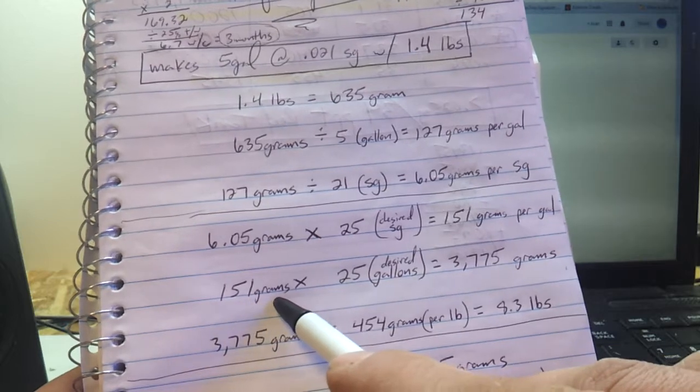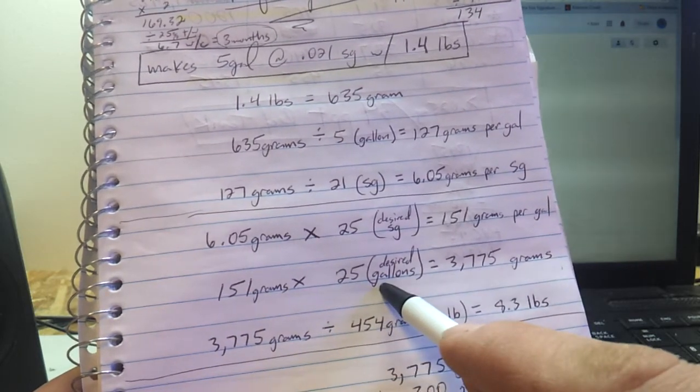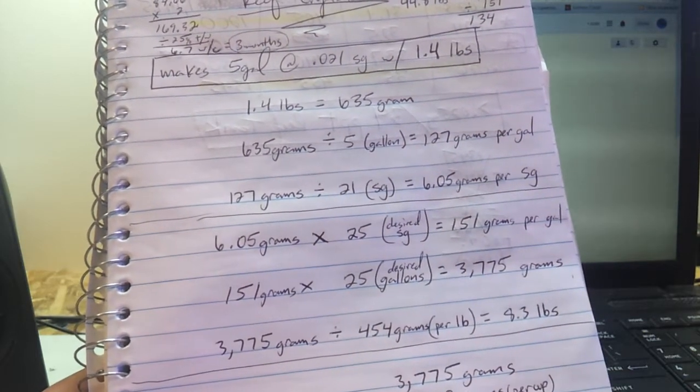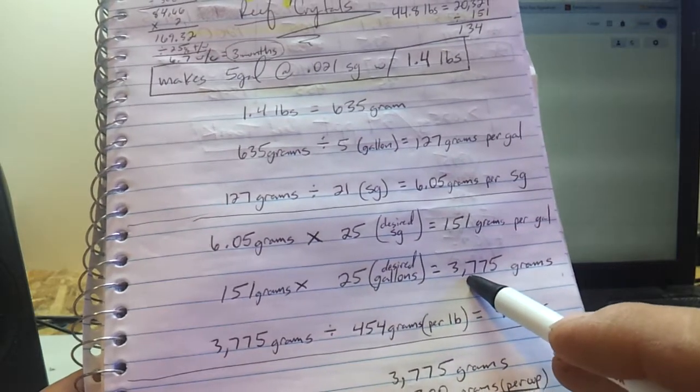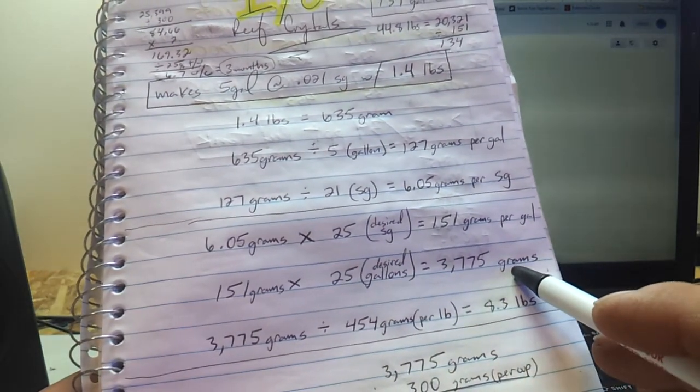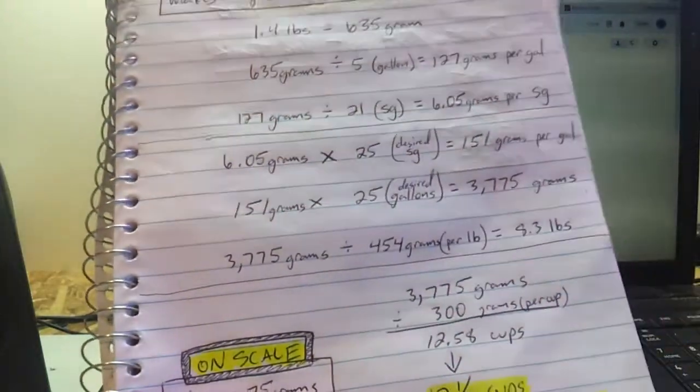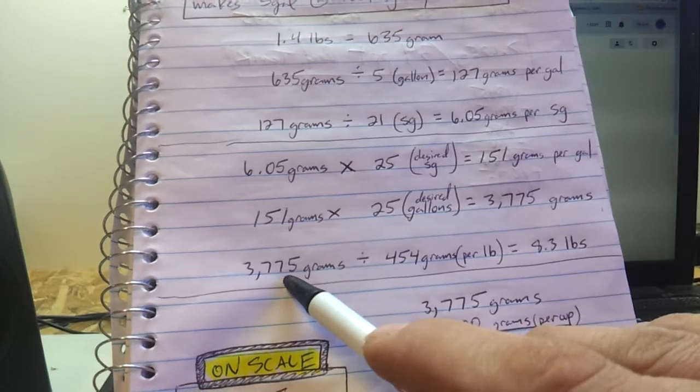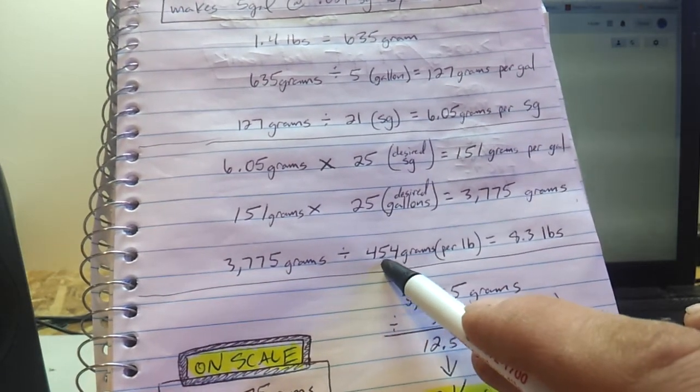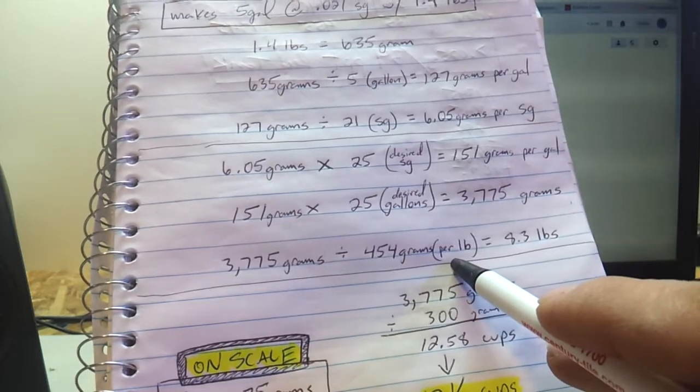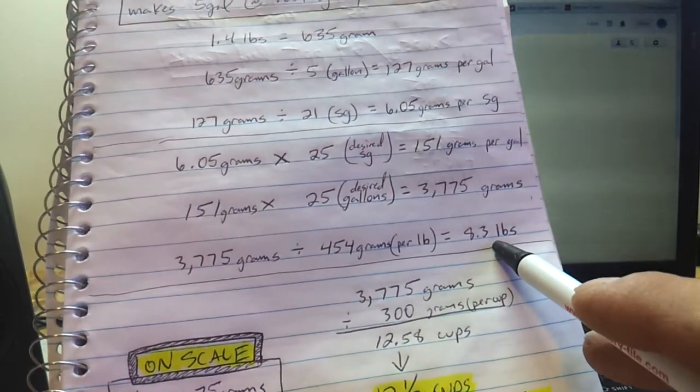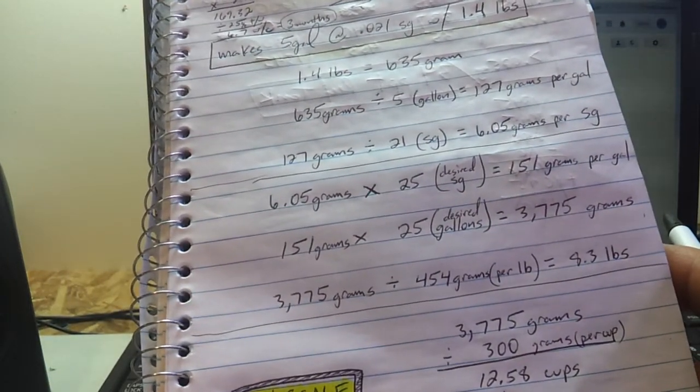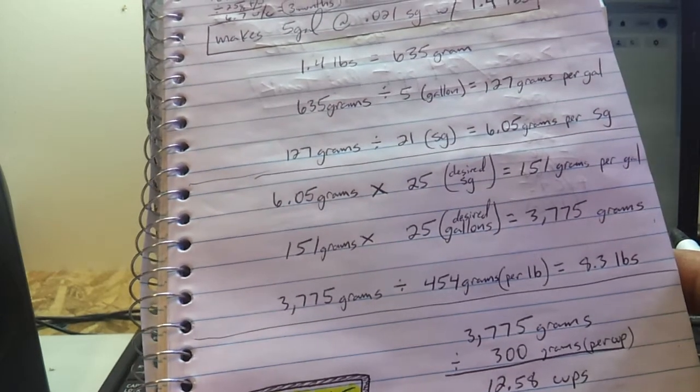So I take the 151 grams per gallon and I times that by the amount of gallons that I want to make. So I want to make 25 gallons, if you've seen my mixing station it holds 25 gallons so that's what I make. And that requires 3,775 grams of reef salt to create that. So the 3,775 grams divided by 454 grams which is how many grams are in a pound, breaks down to 8.3 pounds.